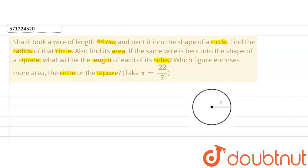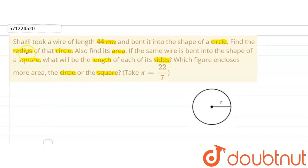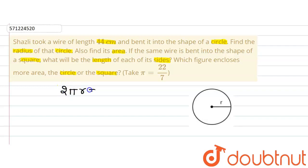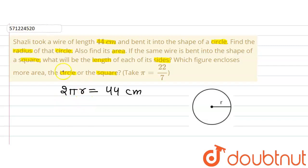And then compare the areas of the circle and that of the square. Now let's solve for the first part of the question. As the wire is of length 44 cm and has been bent to make the circle, the circumference of the circle will be equal to the length of the wire, that is 44 cm. Now using π = 22/7 as given in the question, we can find out the radius.